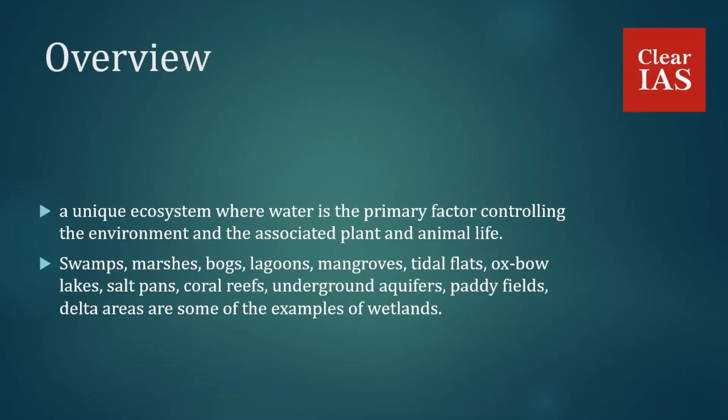Wetlands are found on every continent except Antarctica. Examples of wetlands include swamps, marshes, bogs, lagoons, mangroves, oxbow lakes, salt pans, coral reefs, underground aquifers, paddy fields, delta areas, and more.